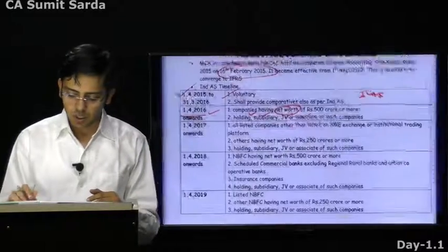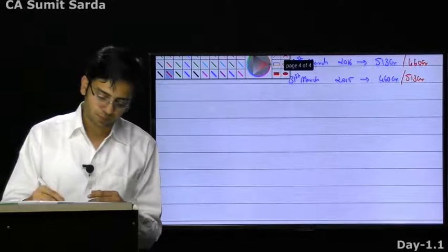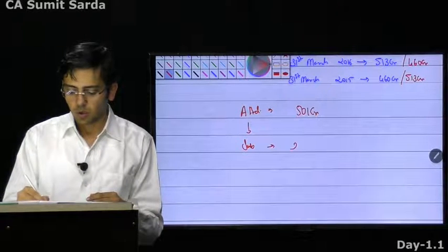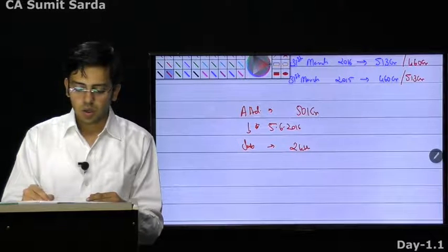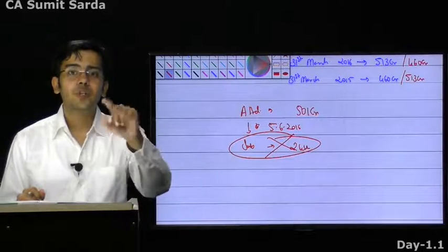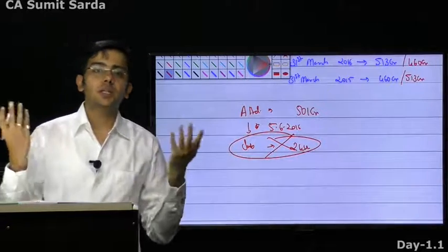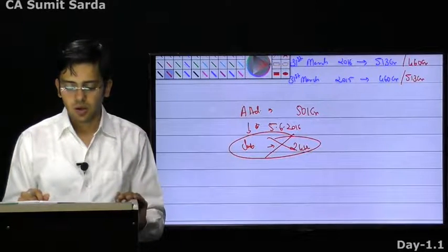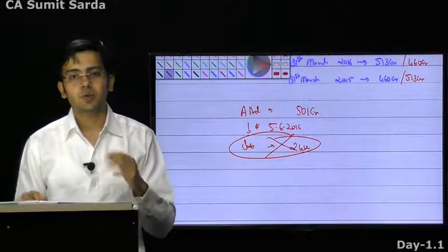Once Indian Accounting Standard is applicable to you, it shall always be applicable. For example: A Limited has a turnover of 501 crore and has a subsidiary with only 2 lakh turnover. On 5th June 2016, the subsidiary ceased to be a subsidiary of A Limited. Was Indian Accounting Standard applicable to the subsidiary on 1st April 2016? Yes — if applicable to A Limited, its subsidiary, holding, JV, and associate are also required to follow Ind AS. Even after 5th June when the relationship ceased, once applicable always applicable — they will have to follow.